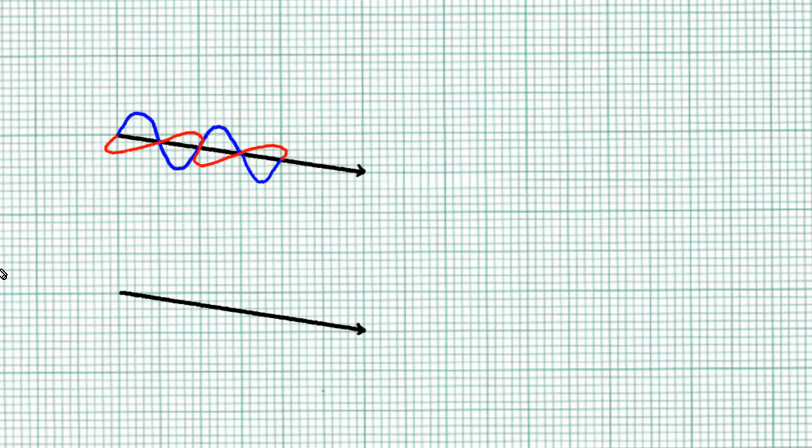When we superpose these two, what's the resultant wave? Now you have to use a bit of your imagination, but this is the resultant wave. It's polarized diagonally, so to speak, diagonally.